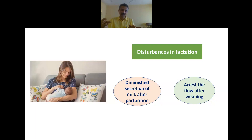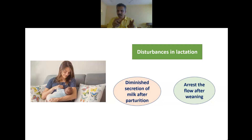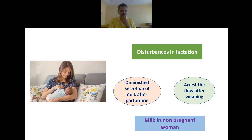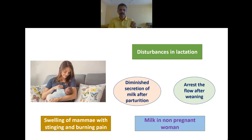If Artica Urans gets indicated when there is excess milk, it will help in drying the milk. There are many other remedies — Laccaninum, Agnus Castus, Pulsatilla, Mercurius — and you should use your intellect and understand the indications properly before prescribing. Milk in non-pregnant women, swelling of mammae with stinging and burning pains — this entire slide talks of the lactation problems and the utility of Artica Urans in those conditions.